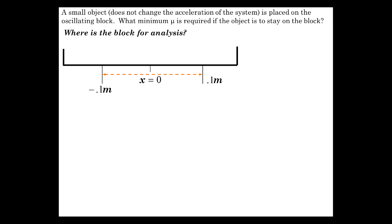We're going to now figure out the minimum coefficient of friction required if you put a little tiny object on the block for it to stay on the block. Now, where is the block for this analysis? We want to find the minimum mu, the minimum mu, the stickiness of the surface, that is required for the object not to slip off. You have to put it at the place where it's going to be most subject to forces that would cause it to slip. And that's where the acceleration would be greatest. Where is the acceleration greatest? You guessed it, at the ends.